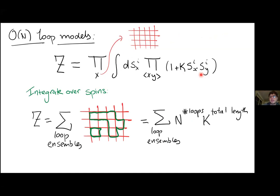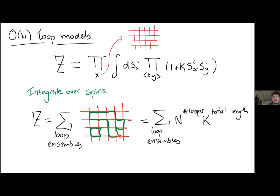This might seem like an academic question, but there are actually very concrete statistical mechanical models for which it is natural to let N be any arbitrary real number. To derive these, we can think about what an O(N) model looks like on the lattice. In two dimensions, at every lattice point we have a spin variable sᵢ — a unit vector — and we couple neighboring lattice points with an O(N) invariant interaction of strength k.